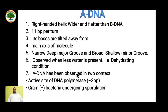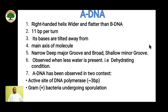A-DNA has been observed in two contexts: it is present at the active site of DNA polymerase, where the length is approximately three base pairs, and it is also found in gram-positive bacteria undergoing sporulation.